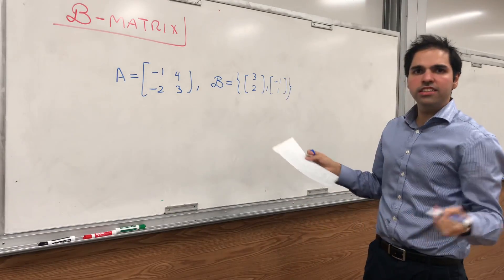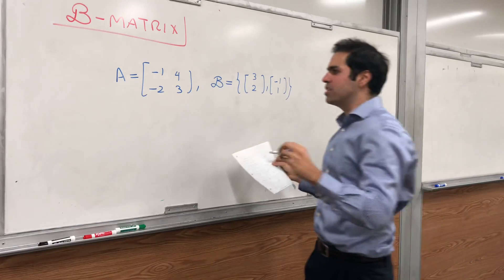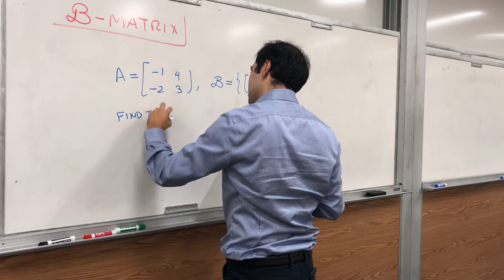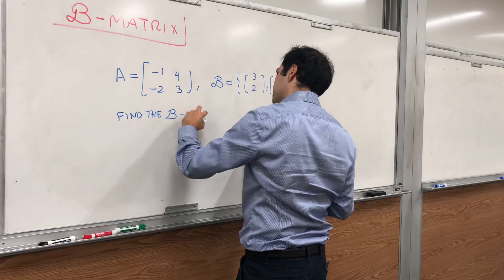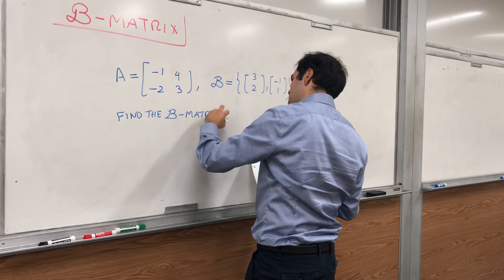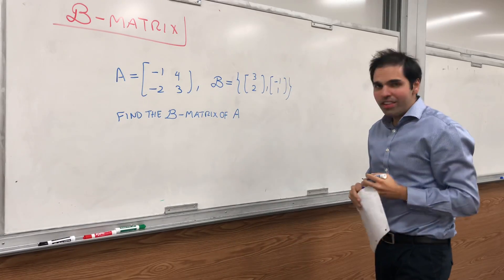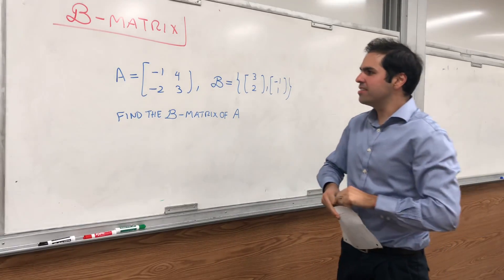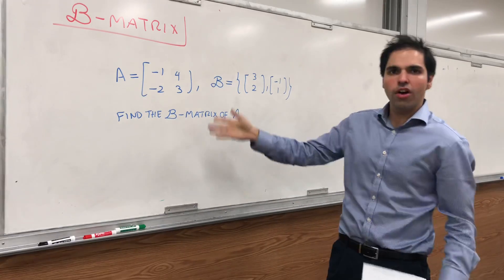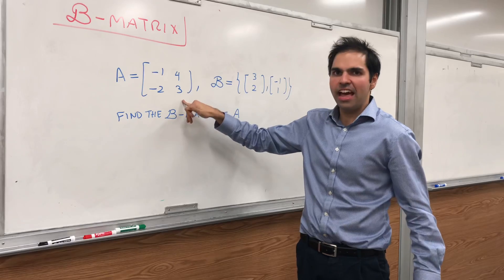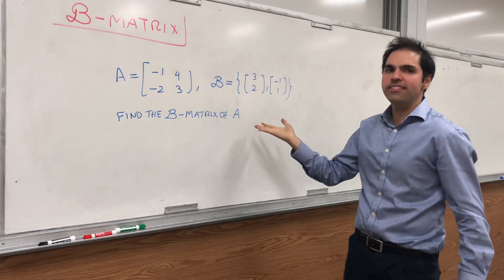And the question is, find the B-matrix of A. What does that mean? It really means find the matrix of the linear transformation T(x) = Ax with respect to the basis B.